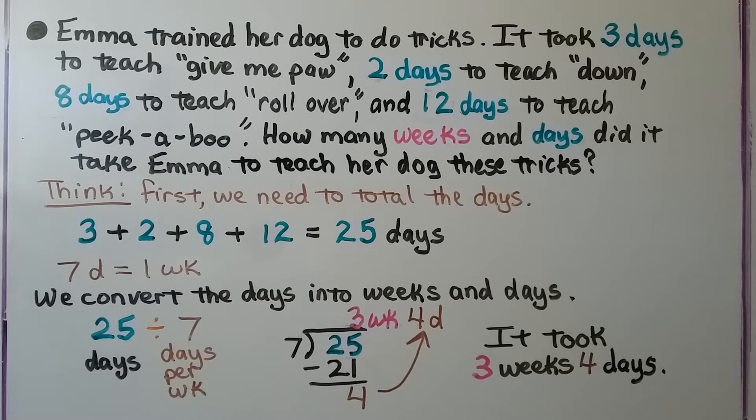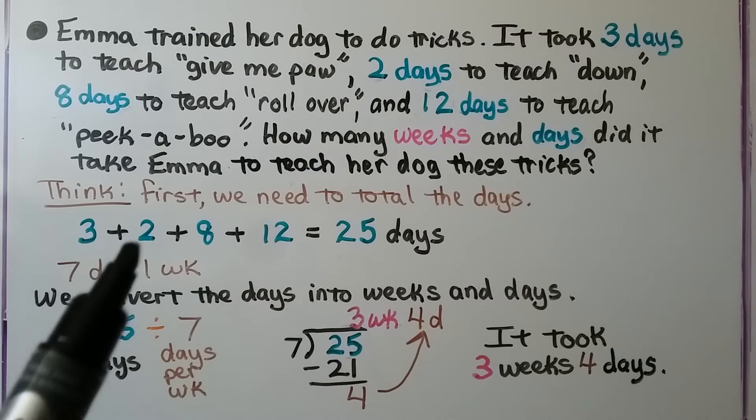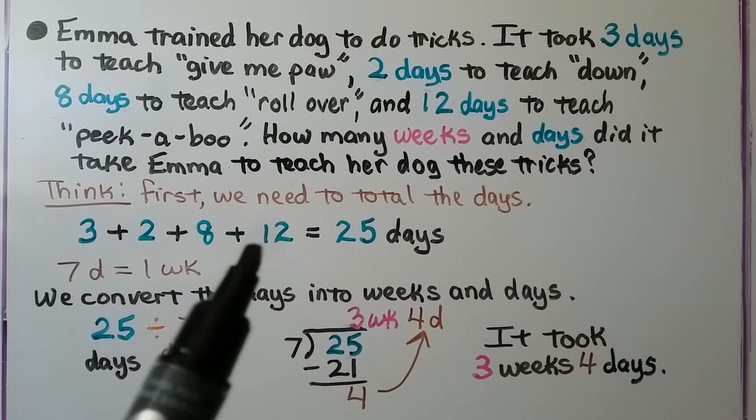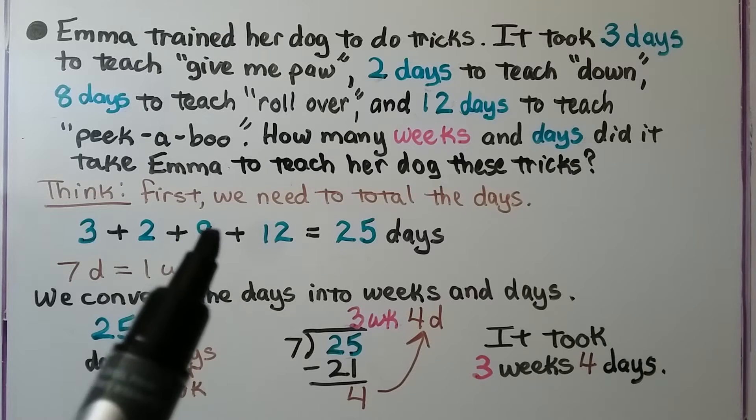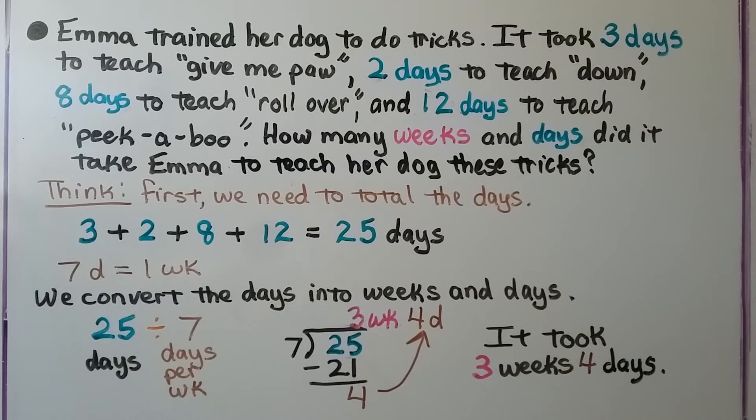So we think, first we need to total the days. We add three plus two plus eight plus twelve, and eight plus twelve is 20, and five more. That's 25 days.